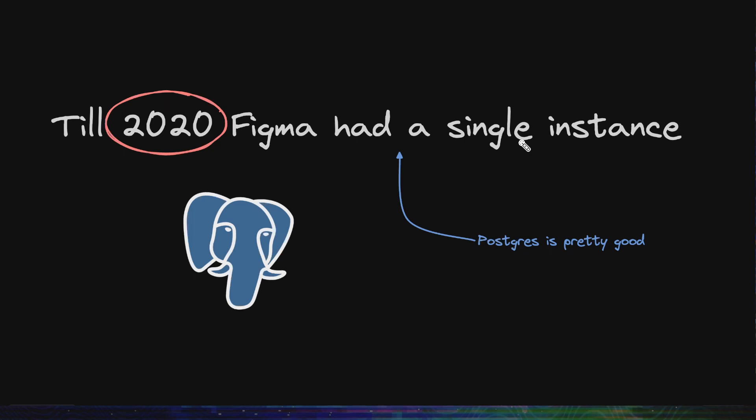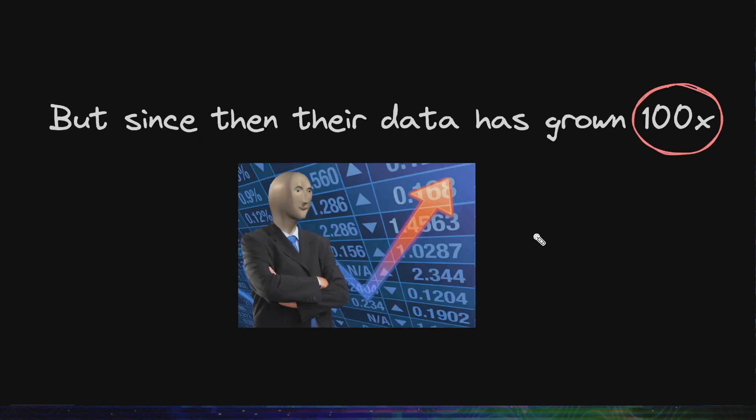Till 2020, Figma had a single instance of Postgres database on the largest instance that AWS RDS had. And herein comes the first learning. By 2020, Figma was a pretty big company and still one instance worked for them. So you really don't need a distributed database for your to-do app. But since then, their data has grown 100x. That's a lot.